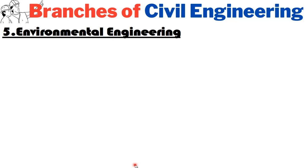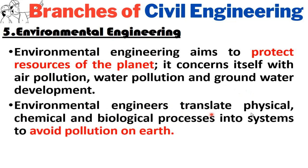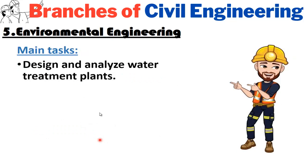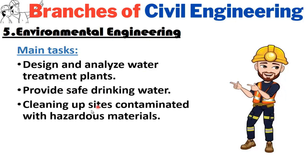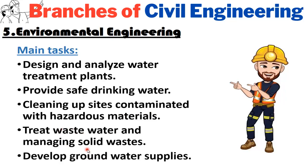The fifth major branch of civil engineering is environmental engineering, which aims to protect the resources of the planet. It concerns itself with air pollution, water pollution, and groundwater development. Environmental engineers translate physical, chemical, and biological processes into systems to avoid pollution on Earth. Main tasks include designing and analyzing water treatment plants, providing safe drinking water, cleaning up sites contaminated with hazardous materials, treating wastewater, managing solid wastes, and developing groundwater supplies.